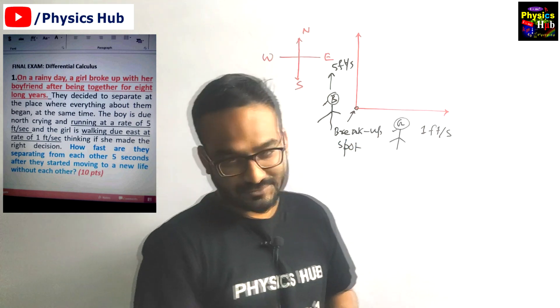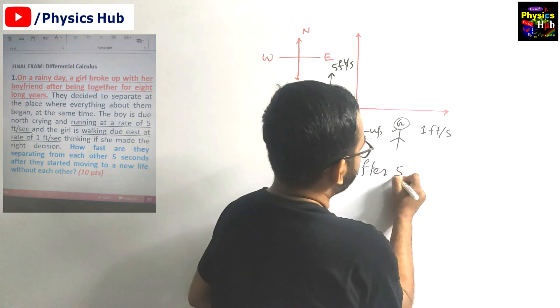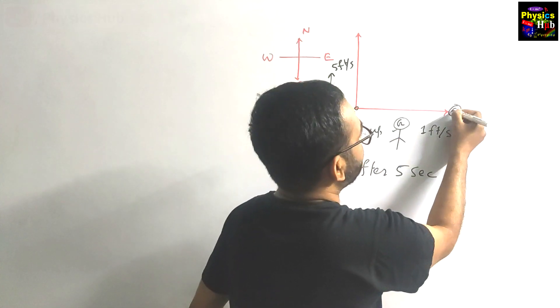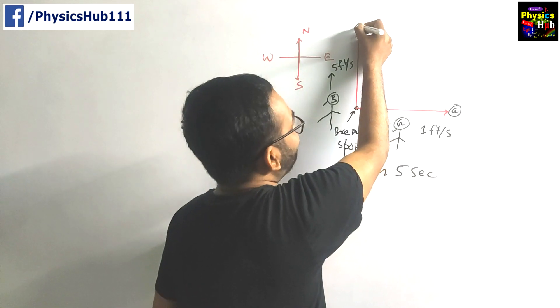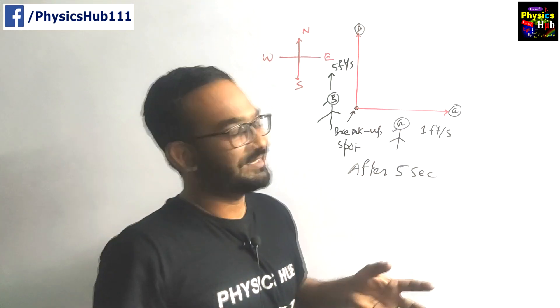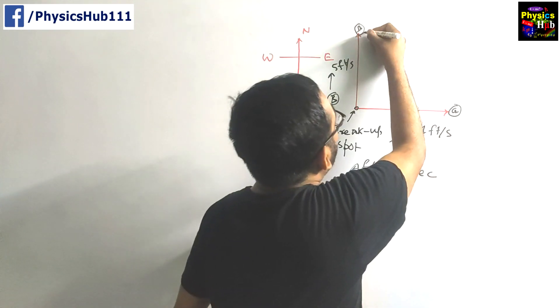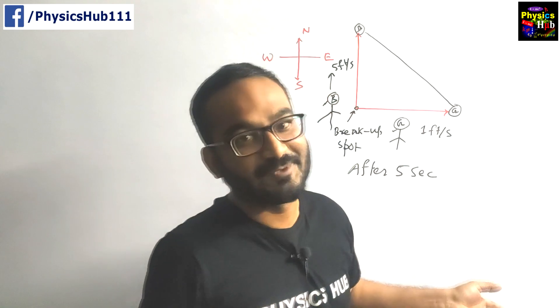So you must have understood. Let's say after 5 seconds, the girl is at this position and the boy is at this position. Now you have to find out after this 5 seconds at what speed they are separating from each other to begin a new life.